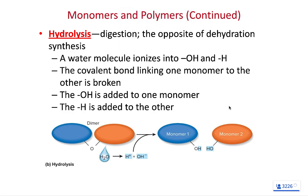We left off on biomolecules, particularly macromolecules. To review: when we say macro, I mean big. These are big molecules, typically with an atomic mass of well over 10,000 amu, or well over 10,000 daltons — so they're ginormous.